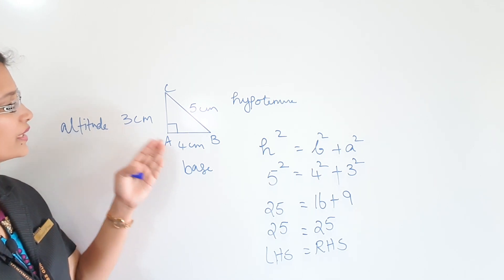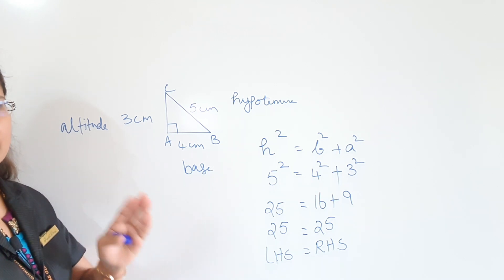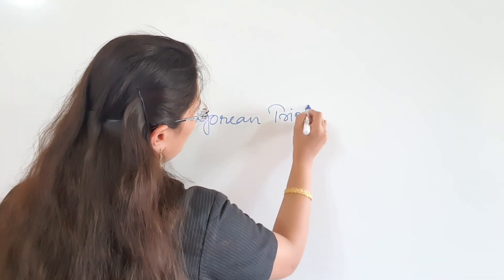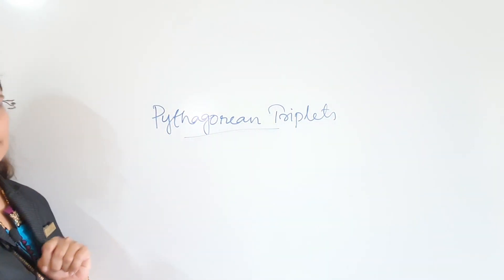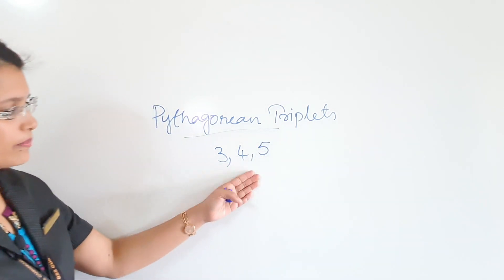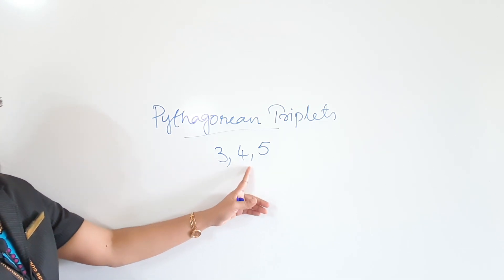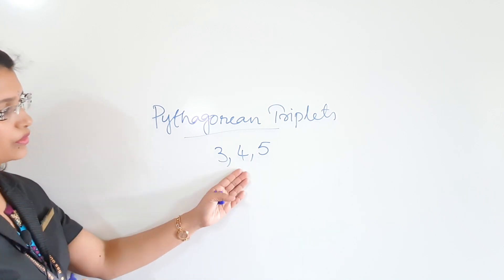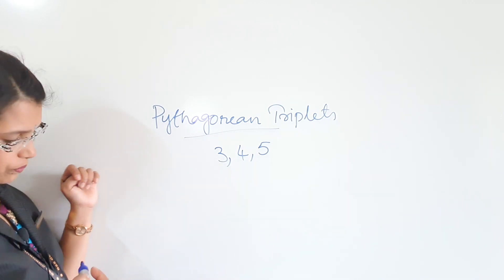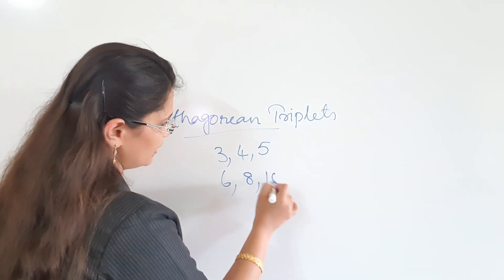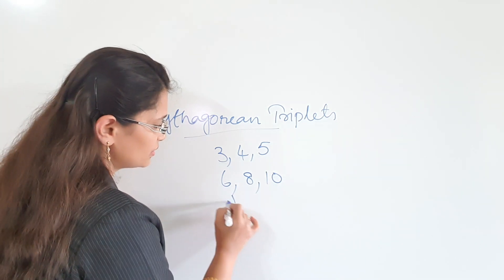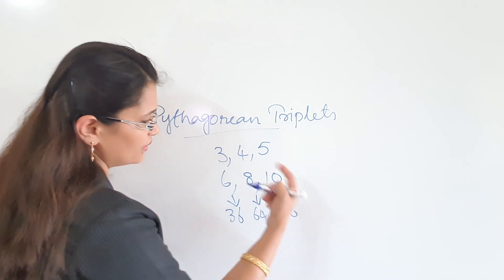Look at this, children: 3, 4, 5 — there is a special name for these types of numbers. They are called Pythagorean triples or triplets. 3, 4, 5 is one pair: 3 square is 9, plus 4 square is 16, so 9 plus 16 equals 25, which is 5 square. Then what about 6, 8, and 10? 6 square is 36, 8 square is 64, so 36 plus 64 equals 100, that is 10 square. So this is also another Pythagorean triplet.